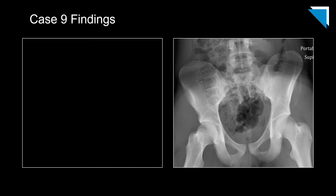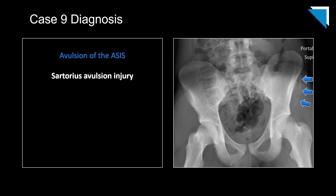This next image is a companion case: a 15-year-old boy with left hip pain. Here is an AP view of the pelvis — if you take a moment to review all the landmarks we just discussed, the finding should be apparent. This is an avulsion injury at the sartorius origin. Note how large the osseous fragment is in this case relative to the last one.